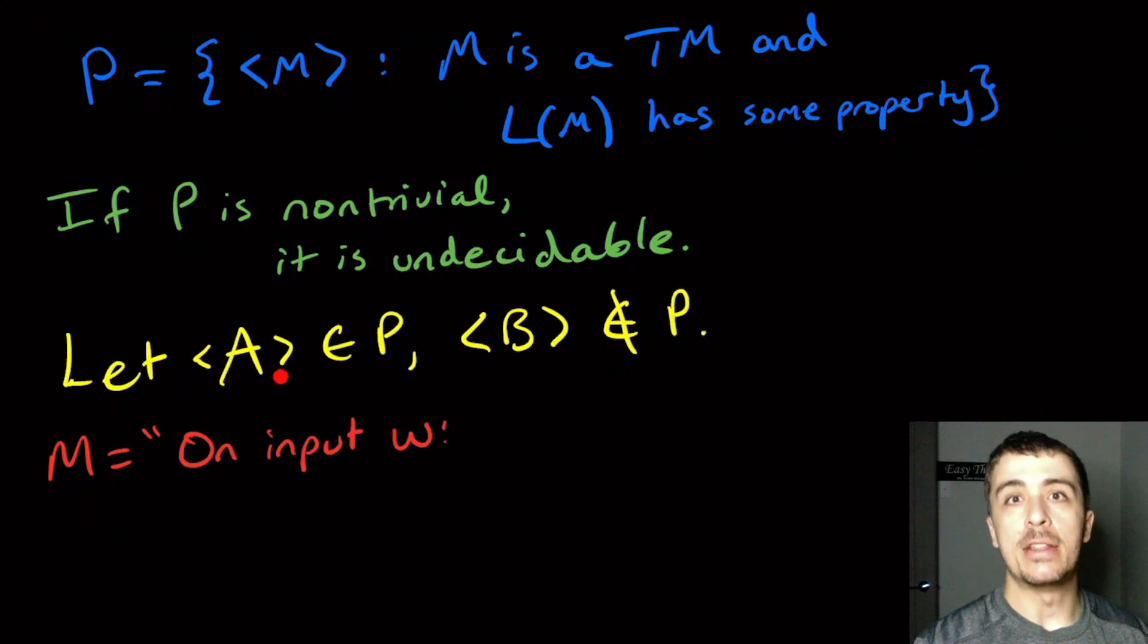That means there is some Turing machine that is in the set P, I'm going to call it A. There must be at least one, and there must be some Turing machine not in P. I'm going to call that machine B. So B is not having the property and A has the property.